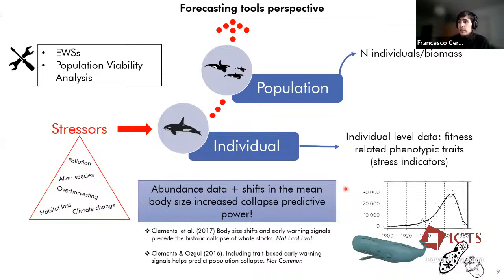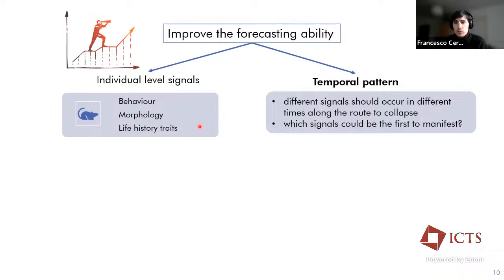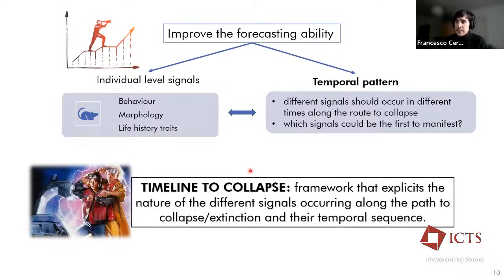So from this, we can understand that to improve our forecasting ability and to widen the perspective of what to look, we need to include individual level signals into the quantities to monitor, such as behavioral quantities or morphology or life history traits, which are information related to, for example, the rate of growth or rate of reproduction of the individuals in a population. But in addition to that, we also need to consider the temporal pattern, how these multidimensional signals are expected to occur in time, one after the other, or potentially together. And this is where an idea of trying to conceptually draw a timeline to collapse happens, defining the timeline to collapse, such as a framework expliciting the nature, so which are the signals that will occur and in which temporal sequence before a population collapse to extinction.